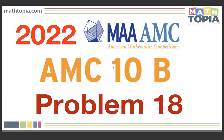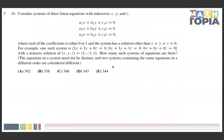Problem number 18. Consider systems of three linear equations with unknowns x, y, and z: a1x + b1y + c1z = 0, a2x + b2y + c2z = 0, and a3x + b3y + c3z = 0. Each of the coefficients is either 0 or 1, and the system has a solution other than x = y = z = 0. For example, one such system is x + y = 0, y + z = 0, 0 = 0, with non-zero solution (1, -1, 1). How many such systems are there? Note: equations need not be distinct, and two systems with the same equations in different order are considered different.